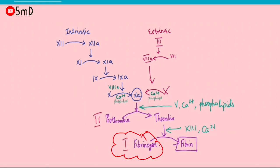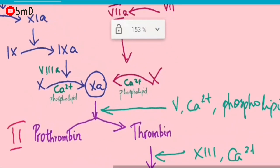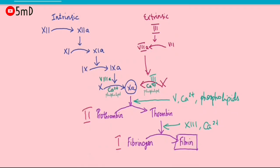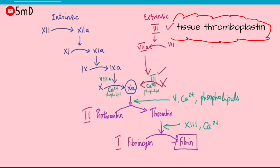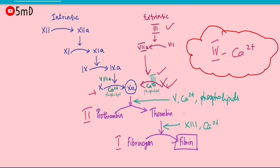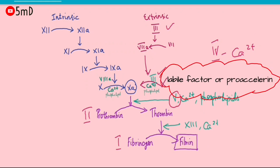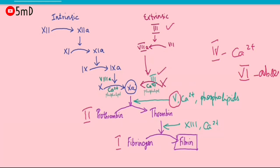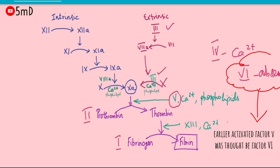Factor 3 helps in the activation of Factor 10 and is also known as tissue thromboplastin, tissue factor, or tissue extract — it is the starting point of the extrinsic pathway. Factor 4 is ionic calcium. Factor 5 is also known as the labile factor or pro-accelerant, as it helps in the acceleration of certain reactions. Factor 6 is missing because activated Factor 5a was previously thought to be Factor 6, but is no longer considered a separate factor.